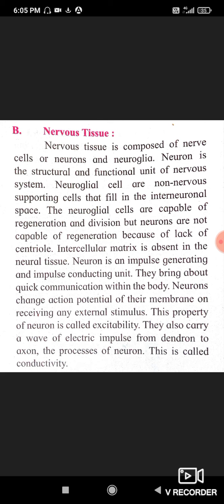Intercellular matrix is absent in neural tissue. Nervous tissue में intercellular matrix नहीं होता, जैसे कि areolar connective tissue में matrix होता है fibers से बना हुआ। Intercellular matrix मतलब cells के बीच की जगह में जो material होता है — वो nervous tissue में नहीं होता।